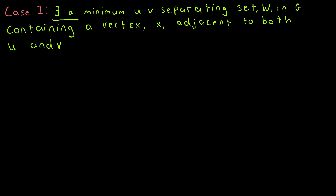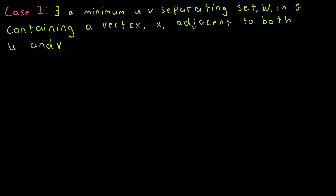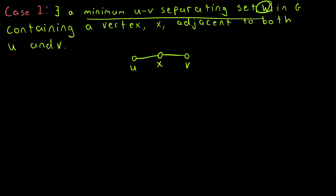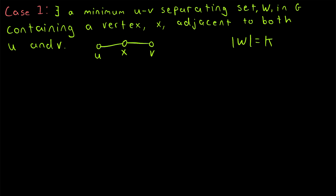Moving on to case 1 — this is going to be a proof by cases with three cases. The first case is that there exists a minimum u-v separating set W in G containing a vertex X that is adjacent to both u and v. Remember that u and v are our non-adjacent vertices that can be separated by deleting a minimum of K vertices, so our minimum separating set W must have K vertices. We can pretty easily apply our induction hypothesis in this case.